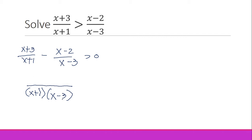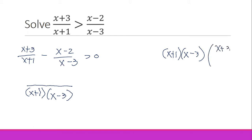Once we have the LCD, we multiply it by the entire expression and write what remains in the numerator. So we multiply (x plus 1)(x minus 3) by (x plus 3) over (x plus 1). The (x plus 1) cancels, leaving (x minus 3) times (x plus 3).